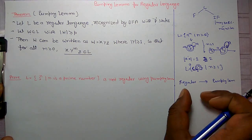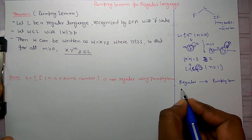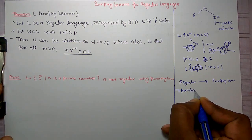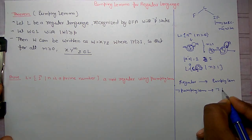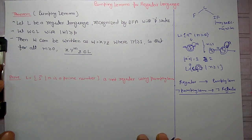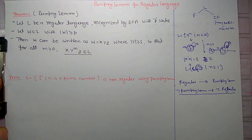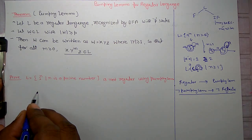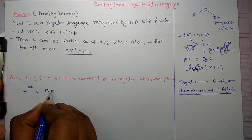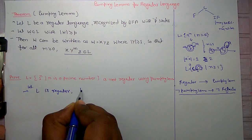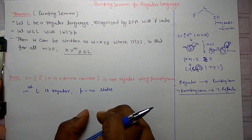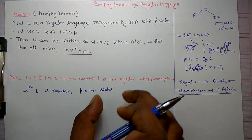It is difficult to prove that all regular sets follow pumping lemma, so we go for the negativity test: if a language does not follow pumping lemma, then it is not regular. We go for this contradiction approach. For example, given a language, to prove it is not regular, we assume L is regular and P is the number of states created in the DFA.